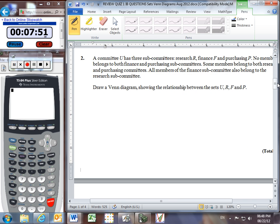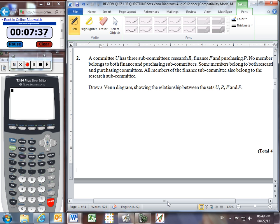Alright, number 2. We have a committee U, so that's really our universal set. And it has three subcommittees: Research R, Finance F, Purchasing P. No member belongs to both Finance and Purchasing subcommittees, so that's going to be an empty set between them. Some members belong to both Research and Purchasing committees, so we do have a non-empty overlapping region there. And all members of the Finance subcommittee also belong to the Research subcommittee.